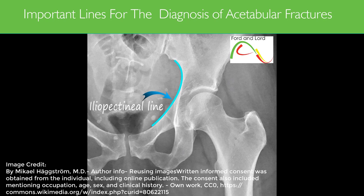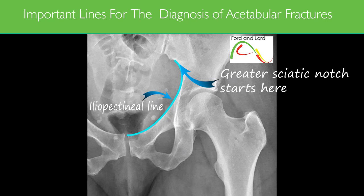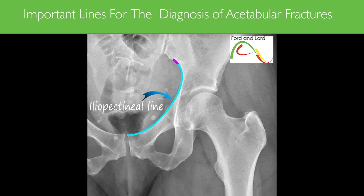The iliopectineal line is formed by the arcuate line and the superior border of the superior pubic ramus, and runs up to the pubic symphysis. By definition, it begins at the sciatic notch and runs along the inner margin of the pelvic ring. It is also known as the iliopubic line and is part of the anterior column of the acetabulum. The iliopectineal line is used to evaluate the anterior column, and is frequently displaced or interrupted in case of fracture of the anterior column.